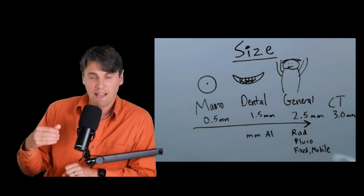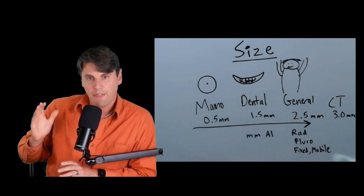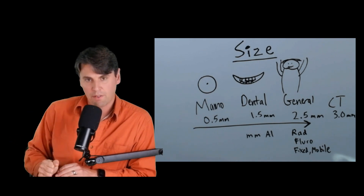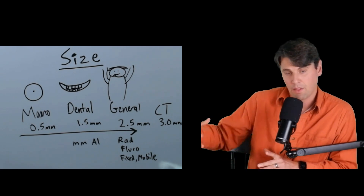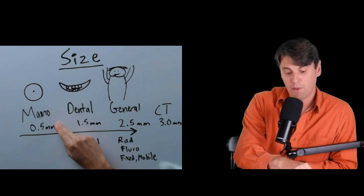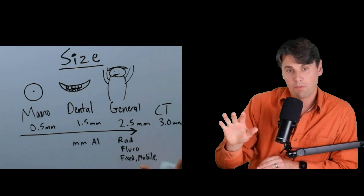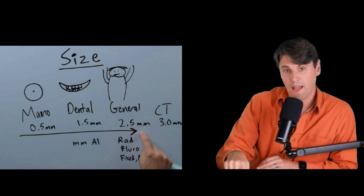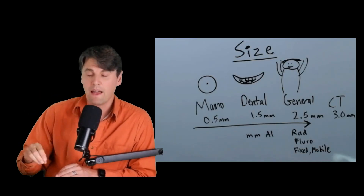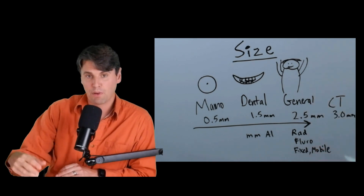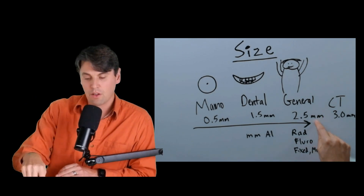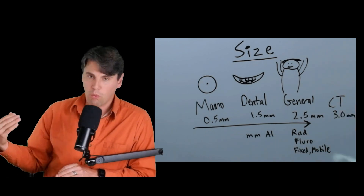For mammography — imaging a small object like the human breast — the limit is 0.5 millimeters of aluminum. For dental, it's 1.5 millimeters of aluminum. The key number to remember is the general purpose radiography requirement: 2.5 millimeters of aluminum, which applies to both fixed radiography systems and fluoroscopy systems where you're imaging through a regular-sized person. In CT, where we're always trying to penetrate through and take multiple views, the requirement is 3 millimeter aluminum equivalent for pre-patient filtration.